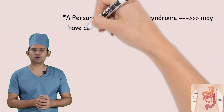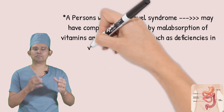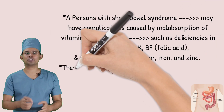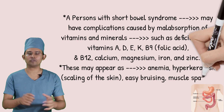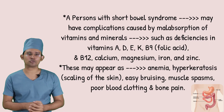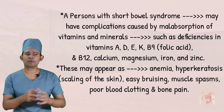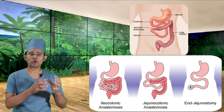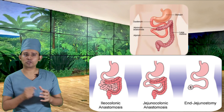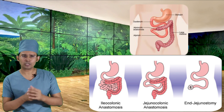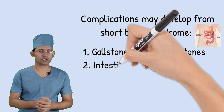Some persons with Short Bowel Syndrome may have complications caused by malabsorption of vitamins and minerals, including deficiencies in vitamins A, D, E, K, B9 (folic acid), and B12, as well as calcium, magnesium, iron, and zinc. These may present as anemia, hyperkeratosis, easy bruising, muscle spasm, poor blood clotting, and bone pain.